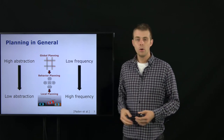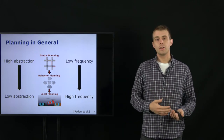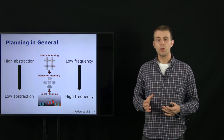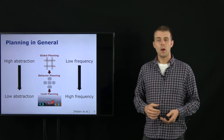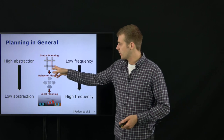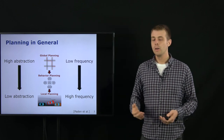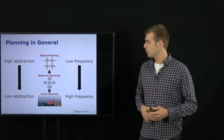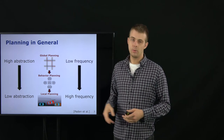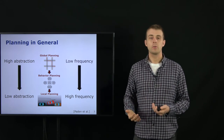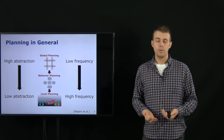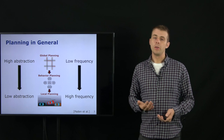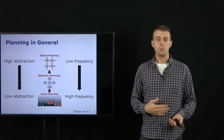For global planning, we put in our start and goal configuration and the global planner returns a very coarse and rough path. For example, it takes a map of the streets or cities and plans where we roughly want to go. This is why we have a high abstraction level — we are not considering traffic signs or other traffic participants — and we can run it at a low frequency because we only need to update it if there is a traffic jam or a blocked road.